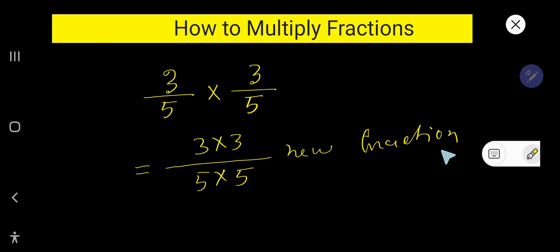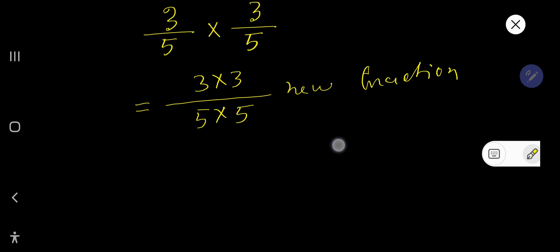Now you need to reduce this new fraction if possible. Look, 3 times 3 is 9, 5 times 5 is 25. There is no common factor between these two numbers except one, so we can say that this is the reduced fraction.